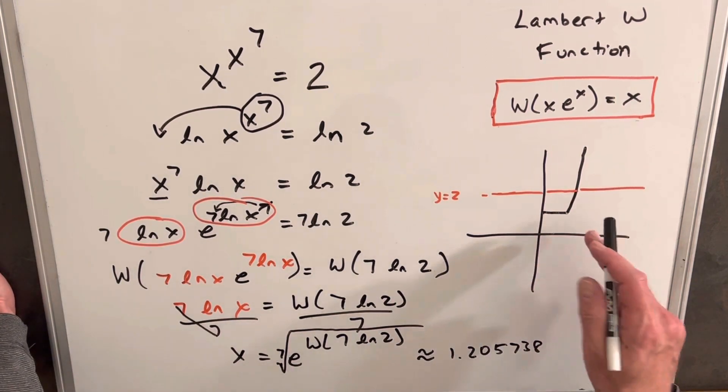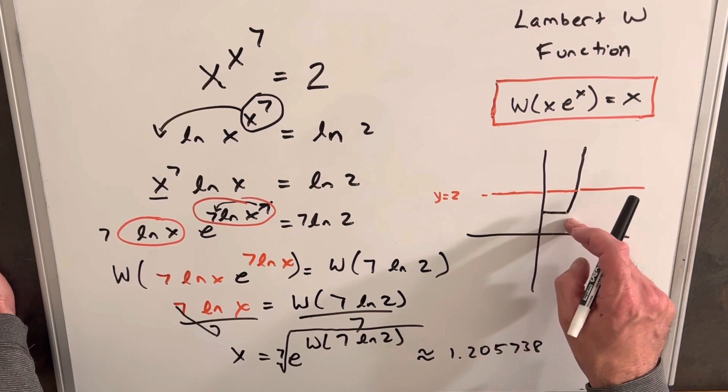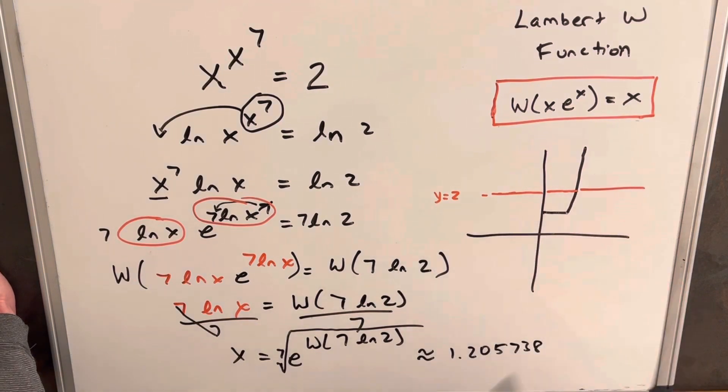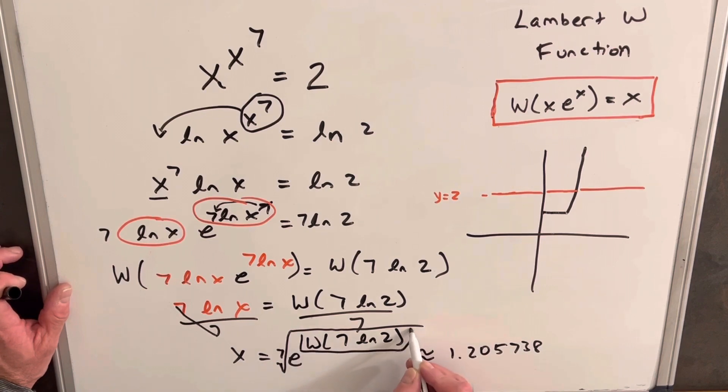And if we look at y equals 2, we'll be right through here. And so this function x to the x to the 7th is actually not always increasing, but it is increasing in this area. But what I want to do specifically is look at this part, just look at this piece of the Lambert W function to see if we could have other real solutions.